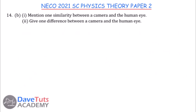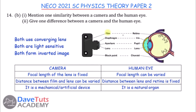Similarities between a camera and the human eye: both use converging lenses, both are sensitive to light, and both form inverted images. Differences: the camera has a fixed focal length while the eye can vary its focal length; the distance between film and lens in a camera can be varied, but the distance between lens and retina is fixed; and the camera is a mechanical device while the eye is a natural organ.